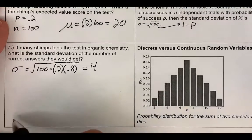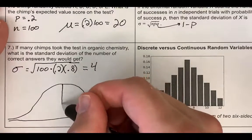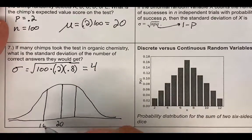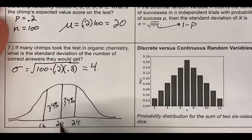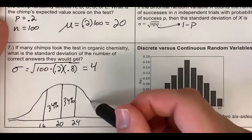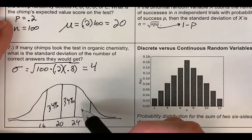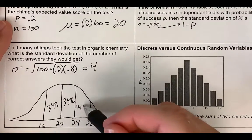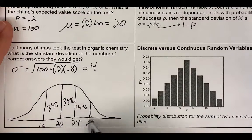We can assume this is approximately normal, with mean 20 and standard deviation 4. Between one standard deviation left and right — scores 16 to 24 — about 68% of chimps will score. Going up to 28 adds another roughly 14%, meaning about 48% of chimps score between 20 and 28. You can see that 30 is essentially an upper bound for the chimps' scores, making it very unlikely to score over 50.